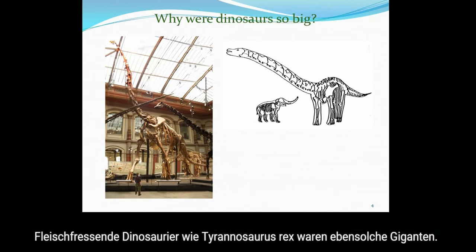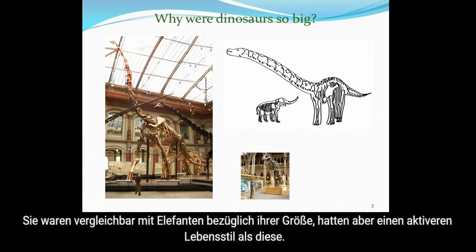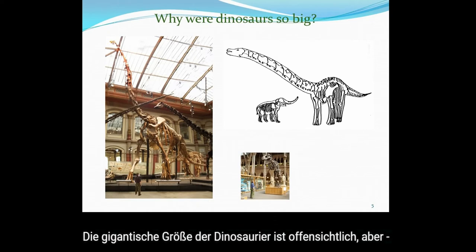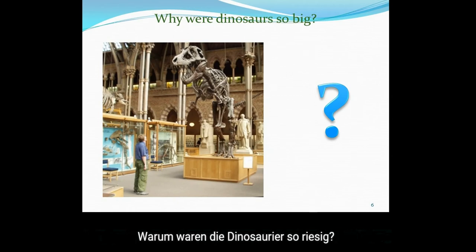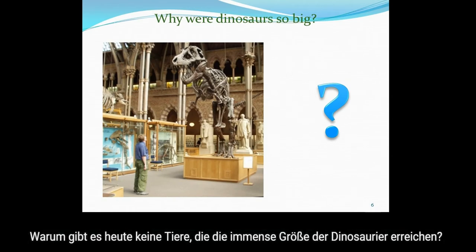Carnivorous dinosaurs such as Tyrannosaurus rex were also gigantic. They were comparable with elephants in size, but seemed to have led a much more active lifestyle than any elephant. The gigantic size of dinosaurs is obvious, but why were the dinosaurs so huge? Why don't present-day animals grow to the immense proportions of the dinosaurs?